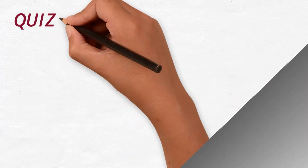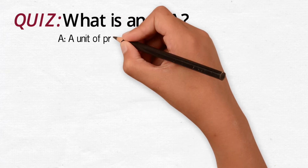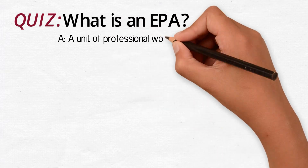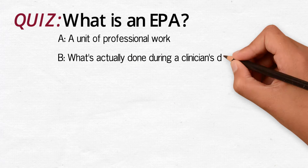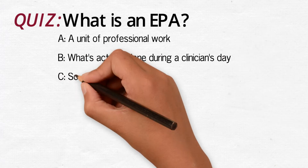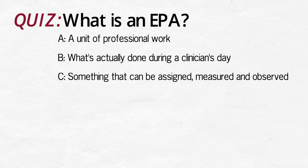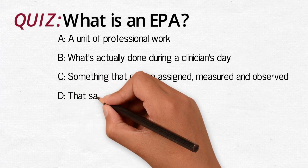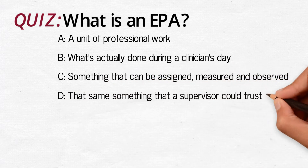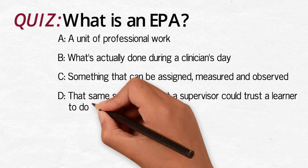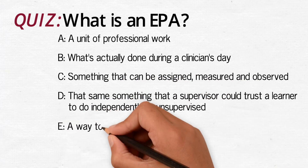Here's a multiple choice question. What is an EPA? A: a unit of professional work. B: what's actually done during the clinician's day. C: something that can be assigned, measured, and observed. D: that same something that a supervisor could trust a learner to do independently or unsupervised.